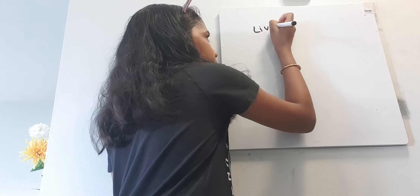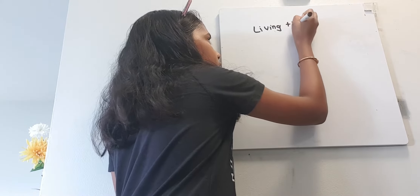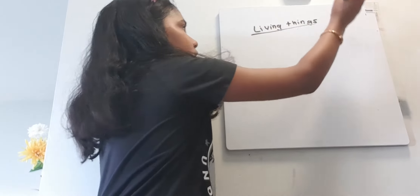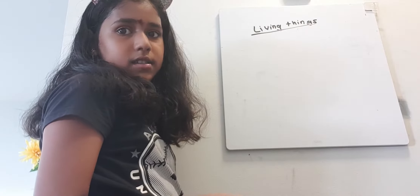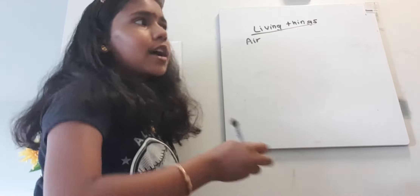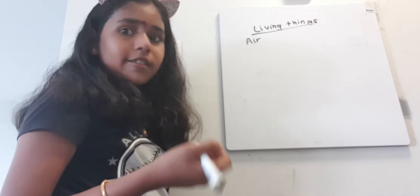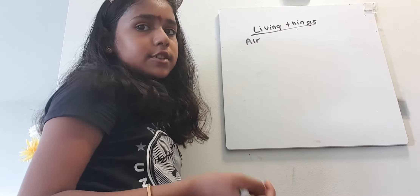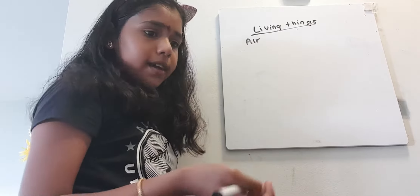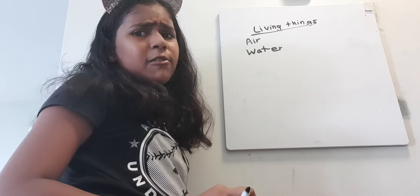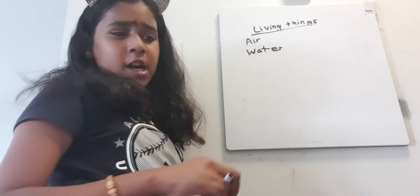Let me write down the characteristics of living things. For living things, we need air — air is surrounded everywhere, as long as there are trees. We also need water to drink and survive, for our thirst. And of course we need food, because we can't starve — we need food even when we have water.